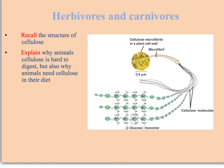Now we're going to contrast the adaptations of herbivores and carnivores to their particular diet. When we think about herbivores, we need to go back and think about the structure of cellulose. Cellulose is a long linear polymer made out of beta-glucose, bonded 1 to 4, and in order to get these long straight chains, every alternate beta-glucose monomer has to be inverted by 180 degrees.